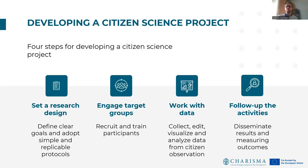To develop a citizen science project, it is important to set a research design, defining clear goals and adopting simple and replicable protocols. Engage target groups of volunteers for recruitment and training activities of participants. Work with data from citizen observation: collect, edit, visualize and analyze data that citizens provide. And finally, set follow-up activities to disseminate results, obtain feedback, and measure outcomes and societal impacts of the citizen science approach.